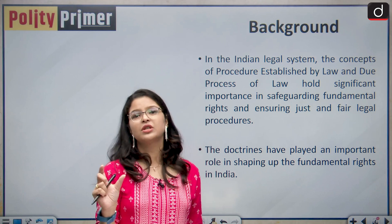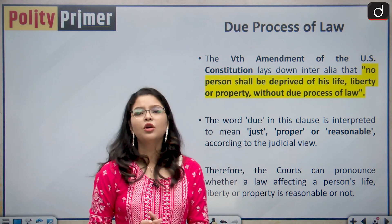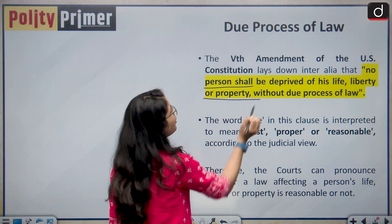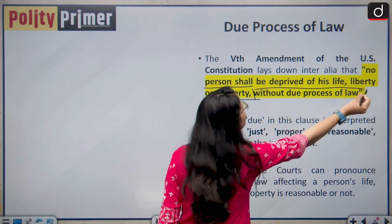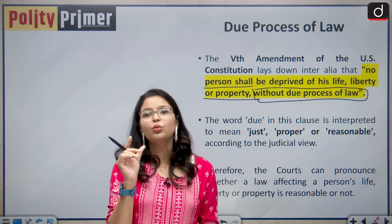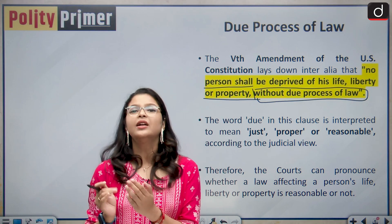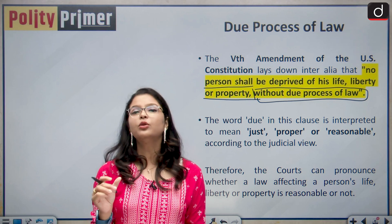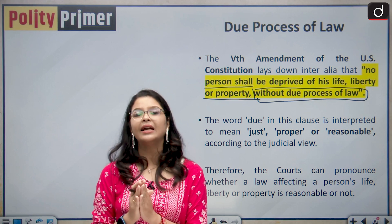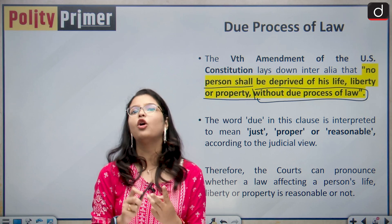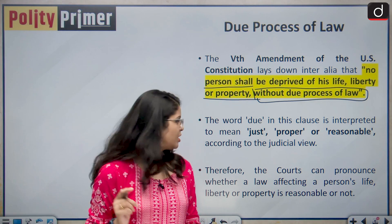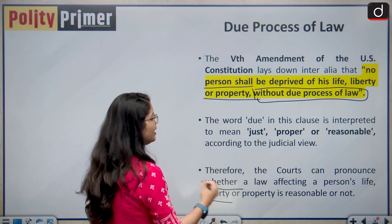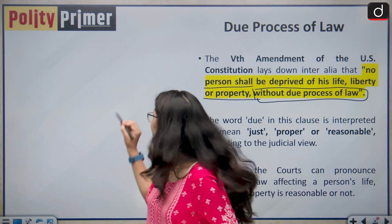The fifth amendment to the US Constitution lays down that no person shall be deprived of his life, liberty, or property without due process of law. The term 'due' in due process of law means that the law cannot be unreasonable or arbitrary — it should be just, fair, and reasonable. Courts can pronounce whether a law affecting personal life, property, or liberty is reasonable or not. This is known as the test of reasonableness.